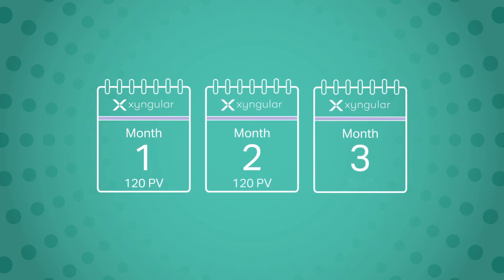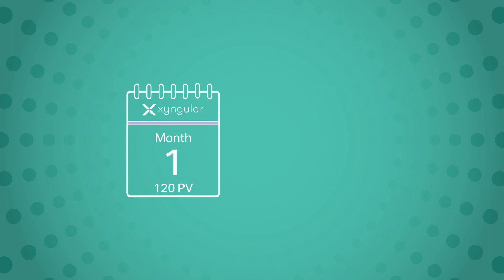Make sure you order 120 PV worth of product month to month. A monthly subscription is an easy way to make that happen.